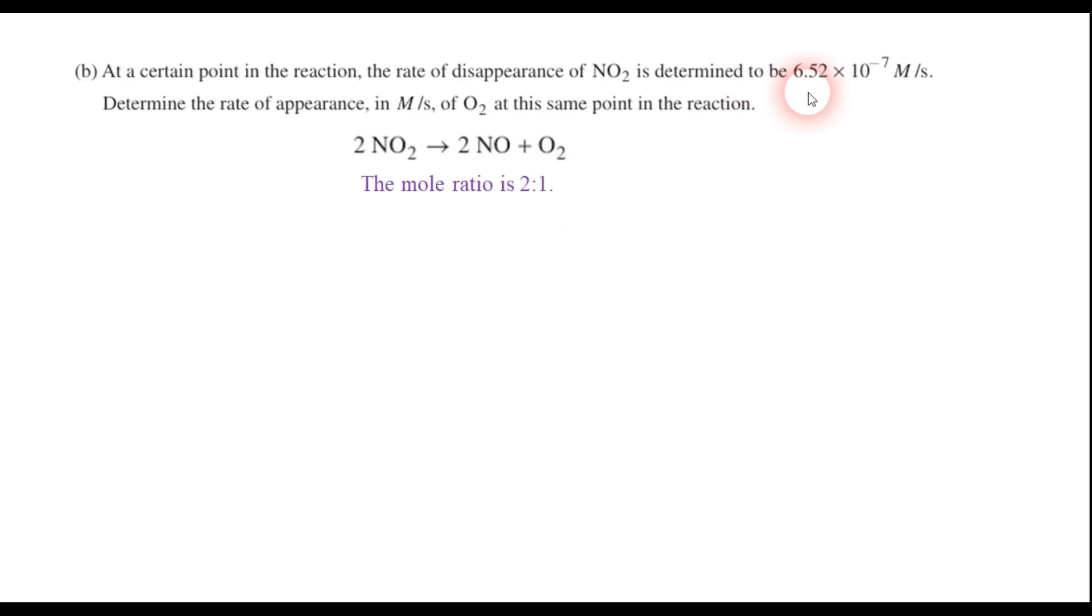So you can just take that number and divide it by 2. Or if you prefer, you can work it out and say 6.52 times 10 to the negative 7th molarity per second NO2, and just do a mole ratio basically. So NO2 on the bottom, O2 on the top. It's one O2 molecule for every two NO2 molecules, so it's just one half of that. Cancel it out and multiply it, and it's 3.26 times 10 to the negative 7th molarity per second oxygen. So that's the answer there. It's just stoichiometry using a mole ratio.